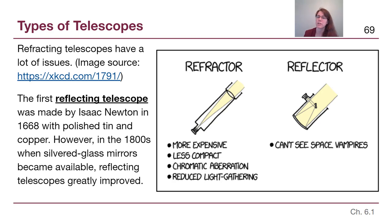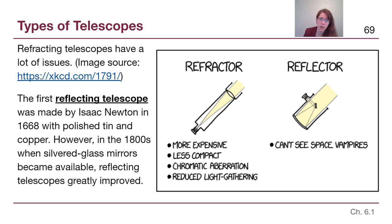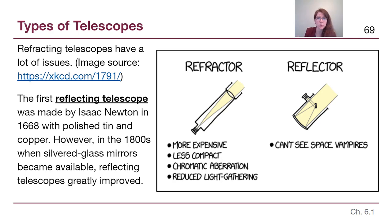Reflecting telescopes are objectively better when we have mirror technology. The first reflecting telescope was made back in the 1600s by Isaac Newton using polished, smooth tin and copper. But once we actually had mirrors the way we're used to seeing them — a silver layer on a piece of glass — that took chemists until the 1800s to figure out. Once we had that technology, astronomy shifted drastically to being able to make much larger and more effective reflecting telescopes.